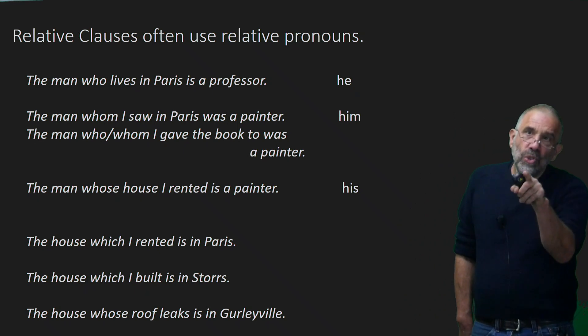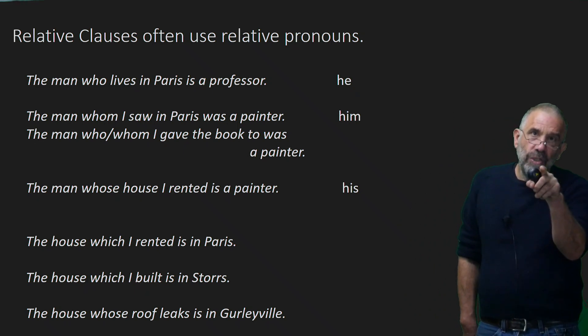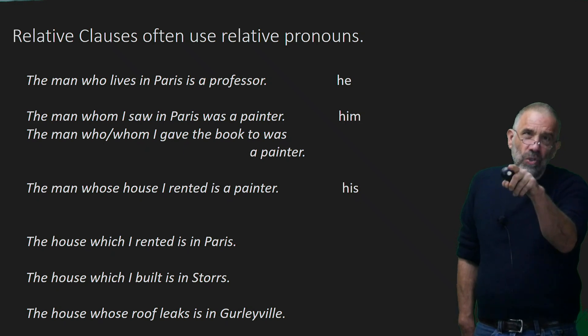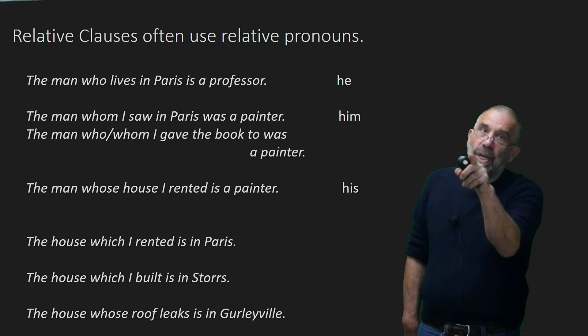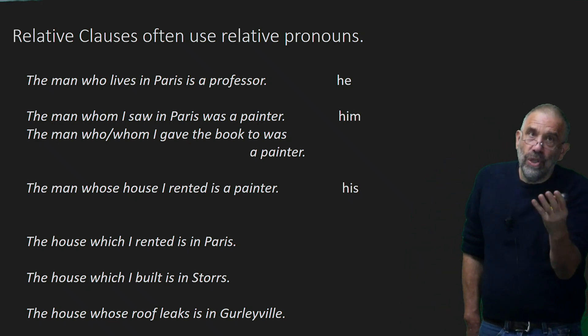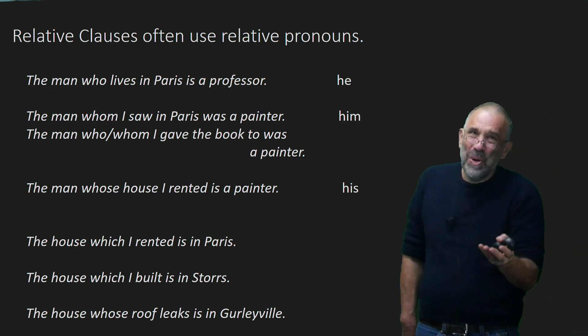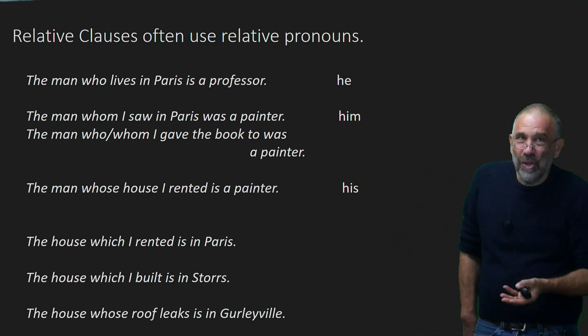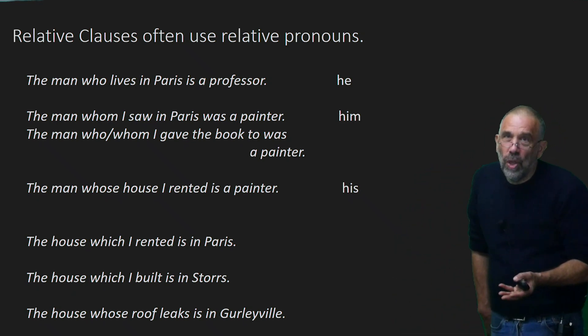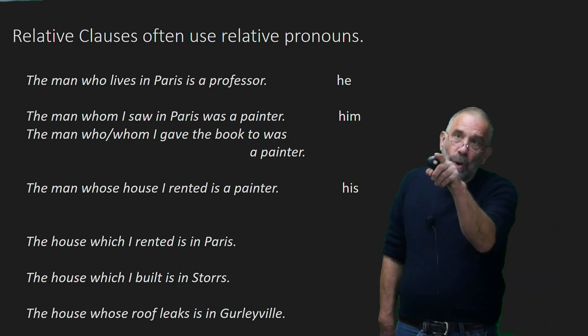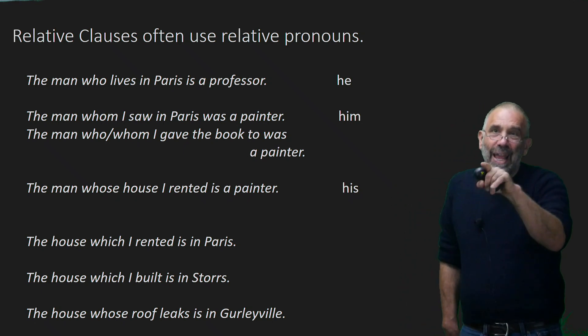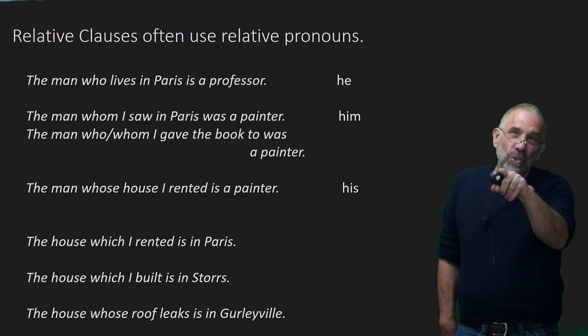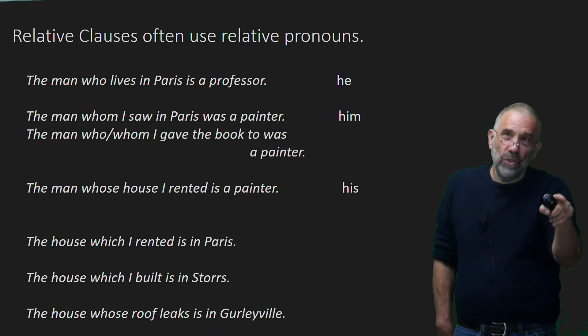And then the last, which I think is interesting, the man whose house I rented. So I rented his house. That whose is the genitive. But it can function as the relative word, the relativizing word, introducing the relative clause. But it expresses, it's a determiner there. I rented his house. And he is a painter.